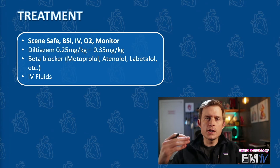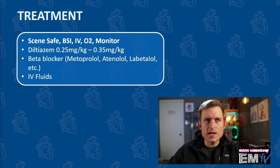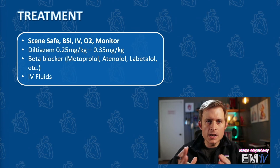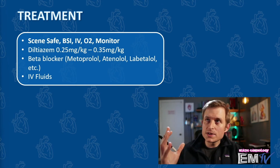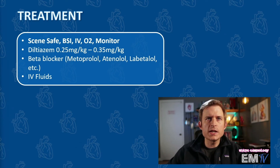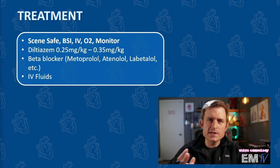Let's look at the treatment. Just like with all Static Cardiology cards, treatment begins by reciting the mantra: scene safe, BSI, IV, O2, monitor. Because this is a stable atrial fibrillation, most of the time pre-hospitally we won't touch this and will allow them to address it at the hospital. But because we are going through ACLS algorithms, we do have to mention some things. My drug of choice here is diltiazem — the dose is 0.25 to 0.35 mg/kg given as a slow IV push, followed by an infusion of 5 mg/hour. Other medications include beta blockers such as metoprolol, atenolol, labetalol, and propranolol. Last, I would administer some IV fluids and then rapid transport.